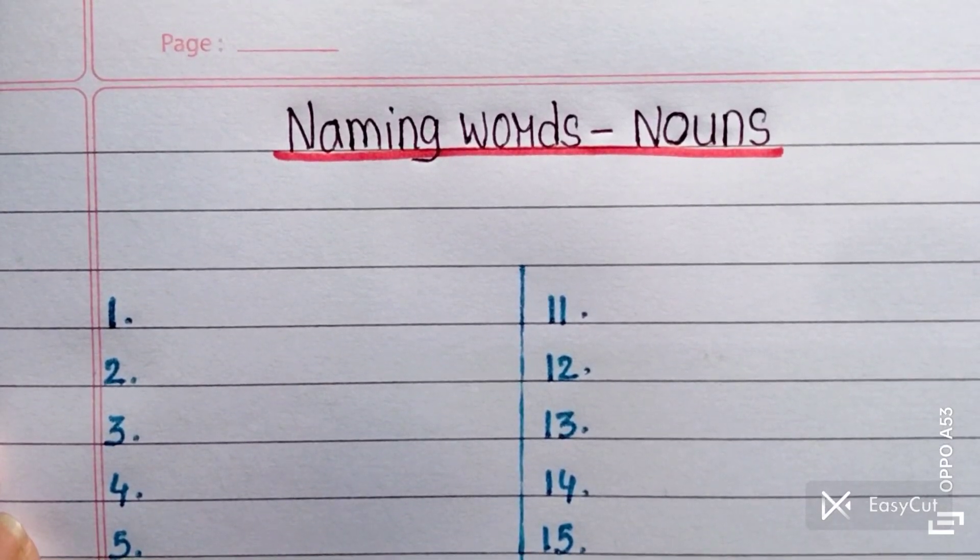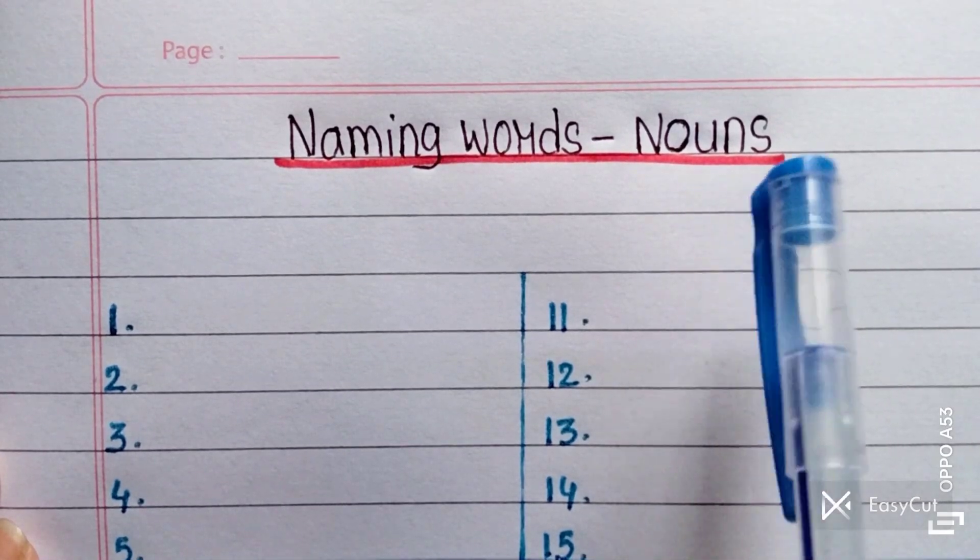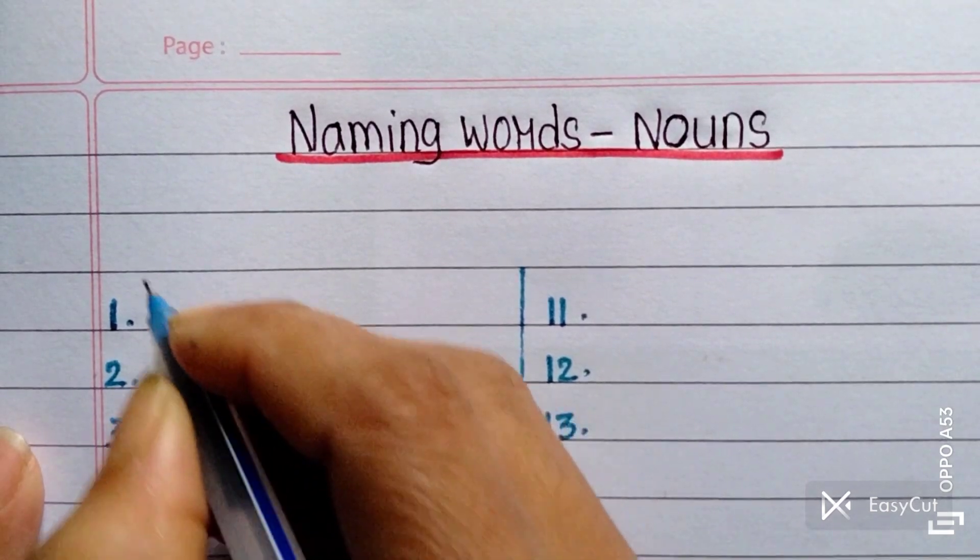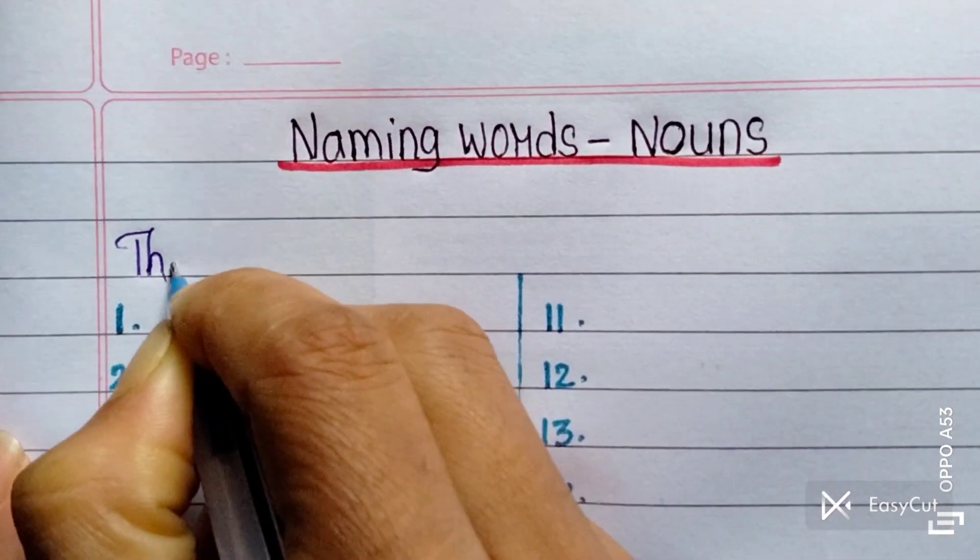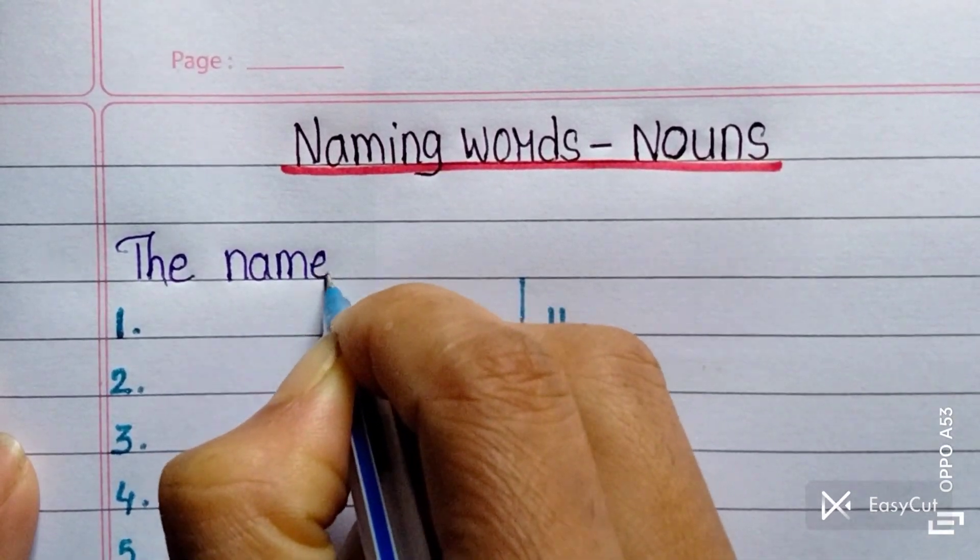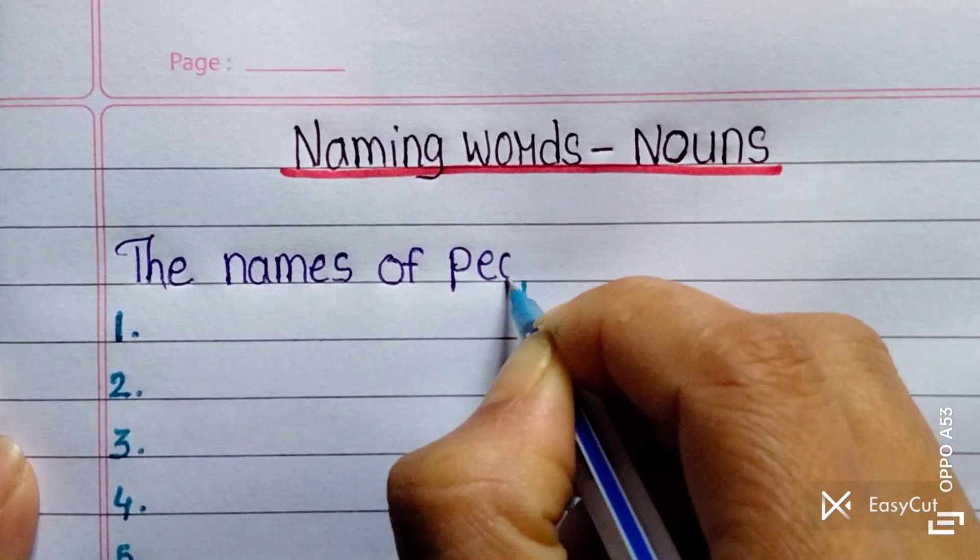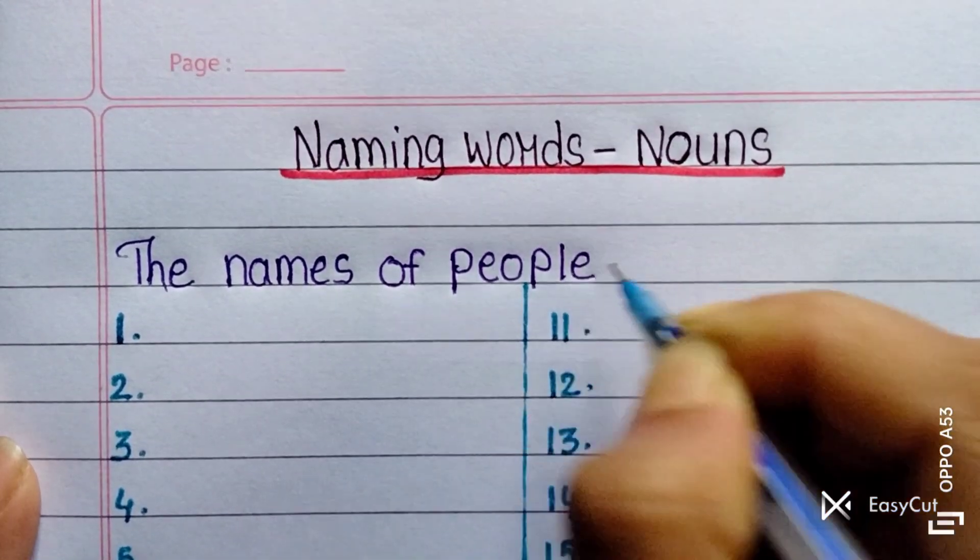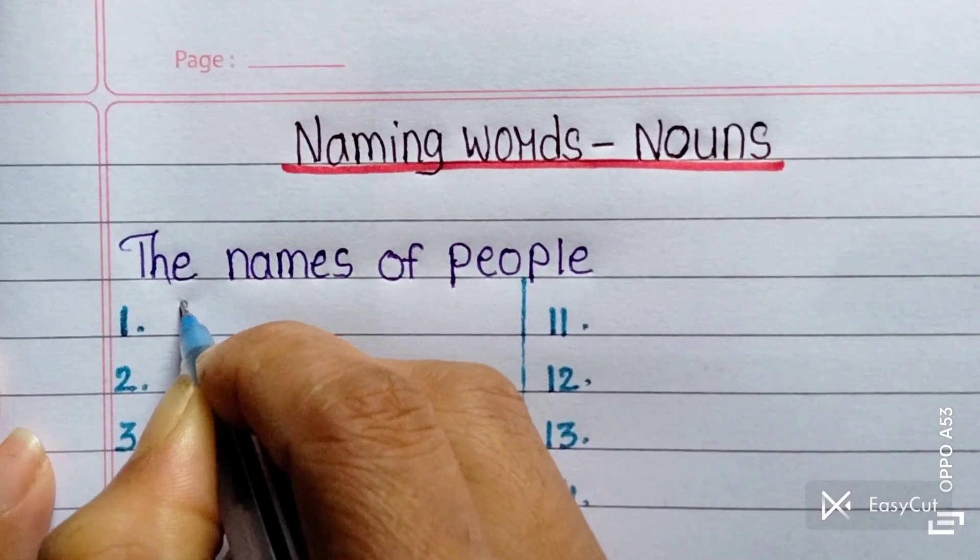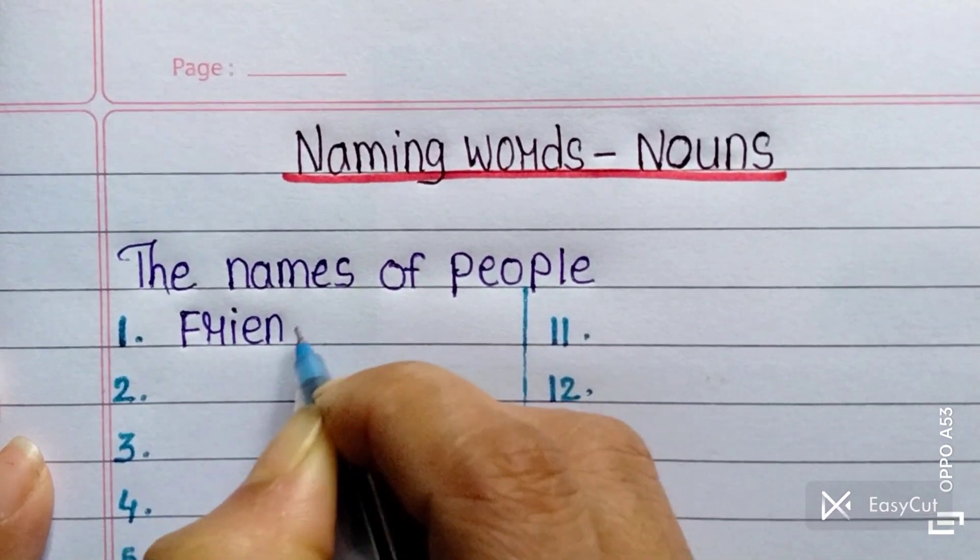Today we are going to learn about naming words, nouns. Let's get started. First one is the names of people. The first one is friend, F-R-I-E-N-D, friend.